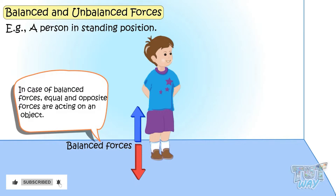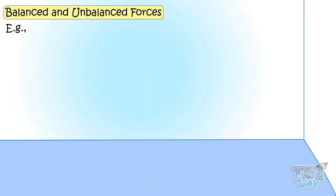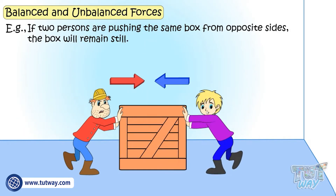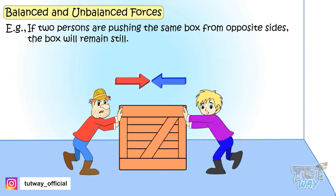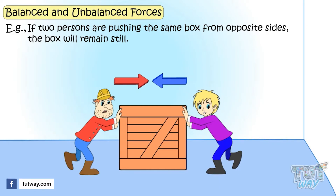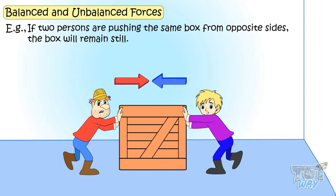In the case of balanced forces, equal and opposite forces are acting in opposite directions, and there will be no movement at all. If there is an object and two persons are pushing it from opposite sides, the object will stay still or will not move if the force acting on both sides is the same — that is, balanced forces are acting on it.